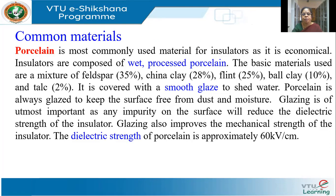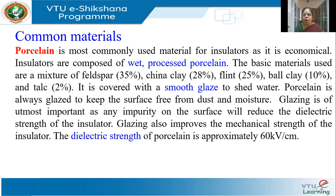Some of the commonly used materials — first is porcelain, very commonly used for insulators and economical. It is composed of wet processed porcelain. The basic materials used are feldspar around 35%, china clay around 28%, flint around 25%, ball clay around 10%, and talc to bind it around 2%.